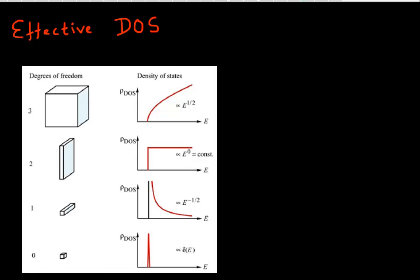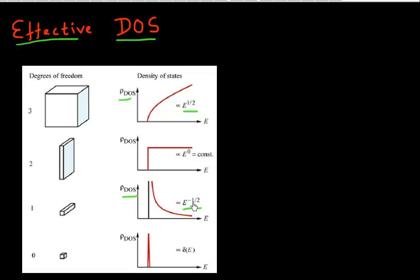We spent quite some time deriving the functional dependence of density of states and how it depends upon energy. We found that for the case of a three-dimensional semiconductor it goes as E to the power one-half. For the case of a one-dimensional semiconductor, it inversely depends upon energy by a relationship which is E to the power minus one-half.